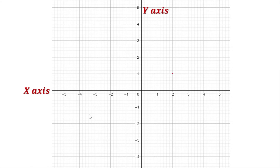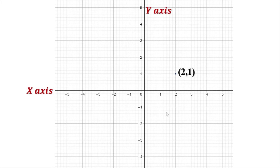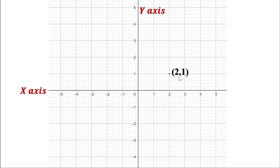Once the axes are drawn, we denote the position of any point using a pair of numbers. This number pair is called the coordinates of this point. The first number is called the x-coordinate and the second number is called the y-coordinate. It is also very easy to remember — just remember the English alphabets: x comes first and then comes y. In a similar way, the first number is the x-coordinate and the second number is the y-coordinate.